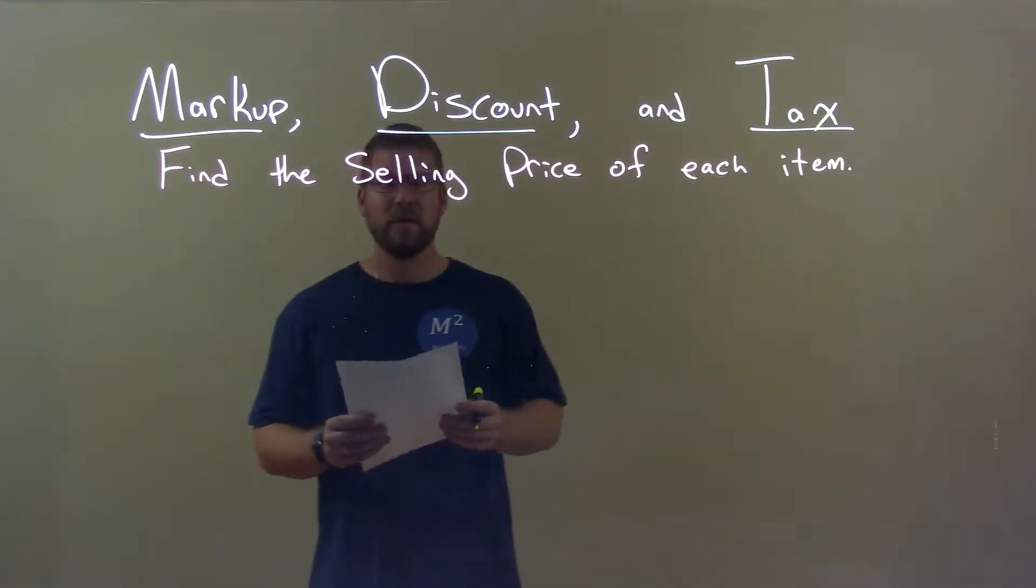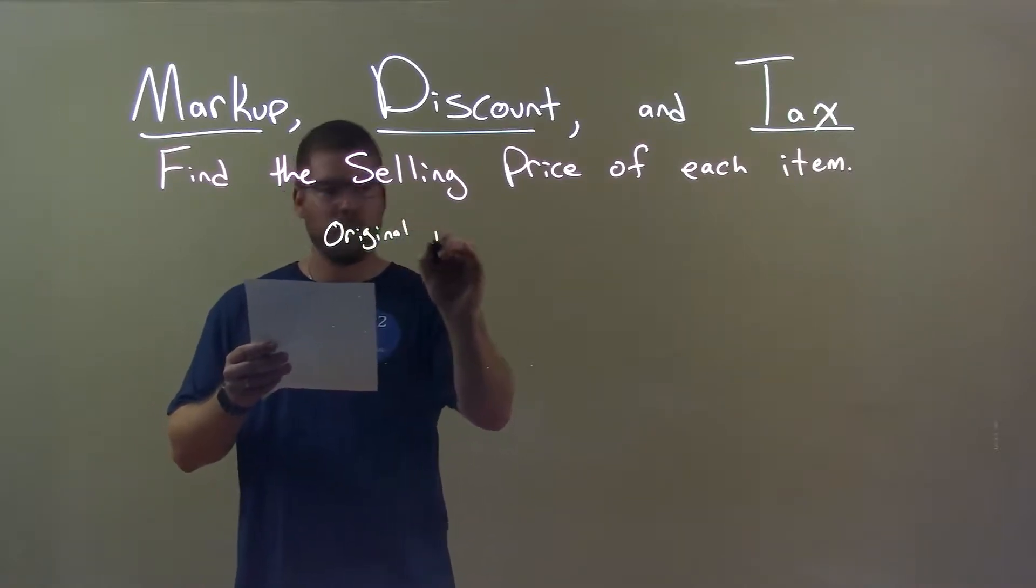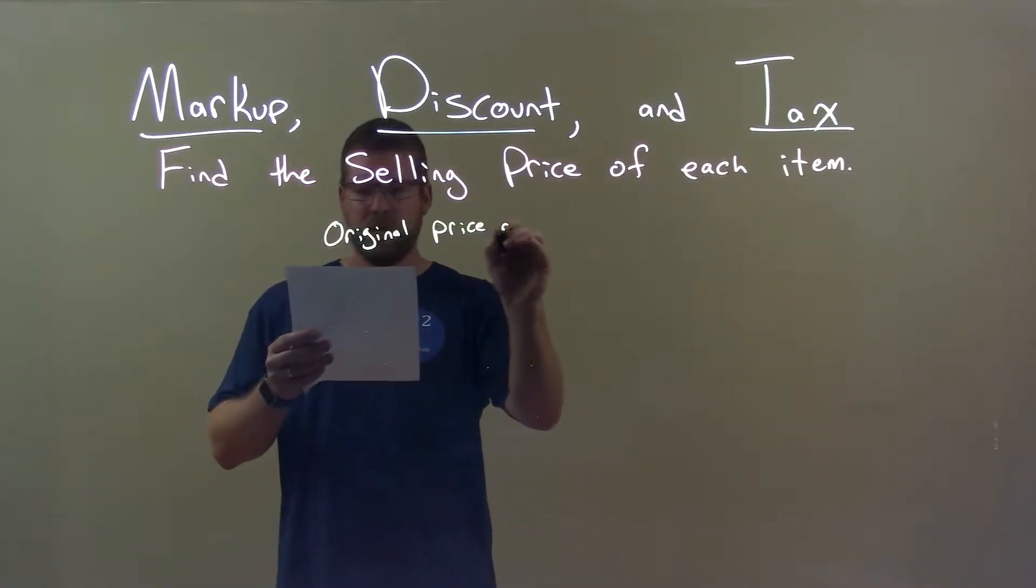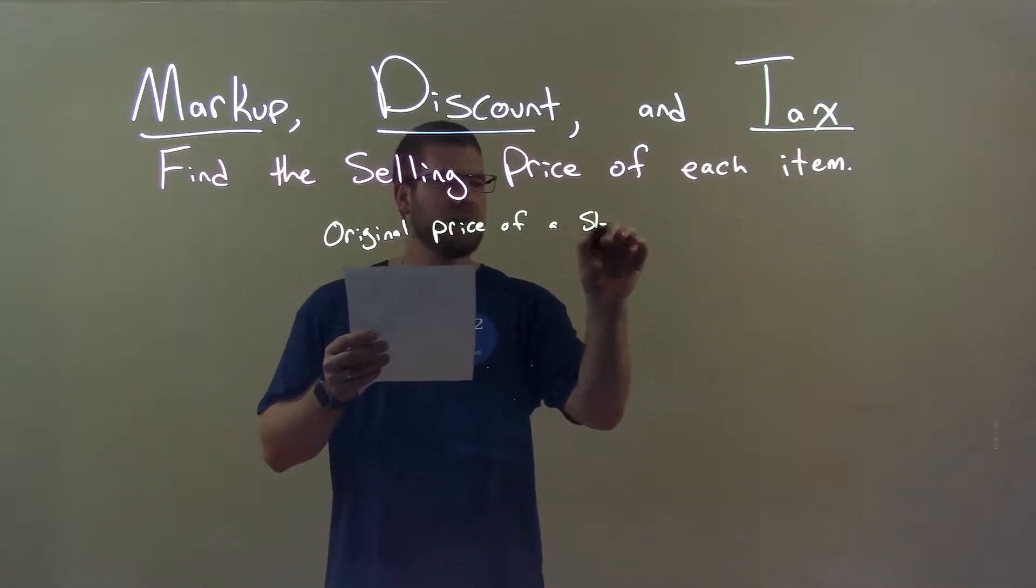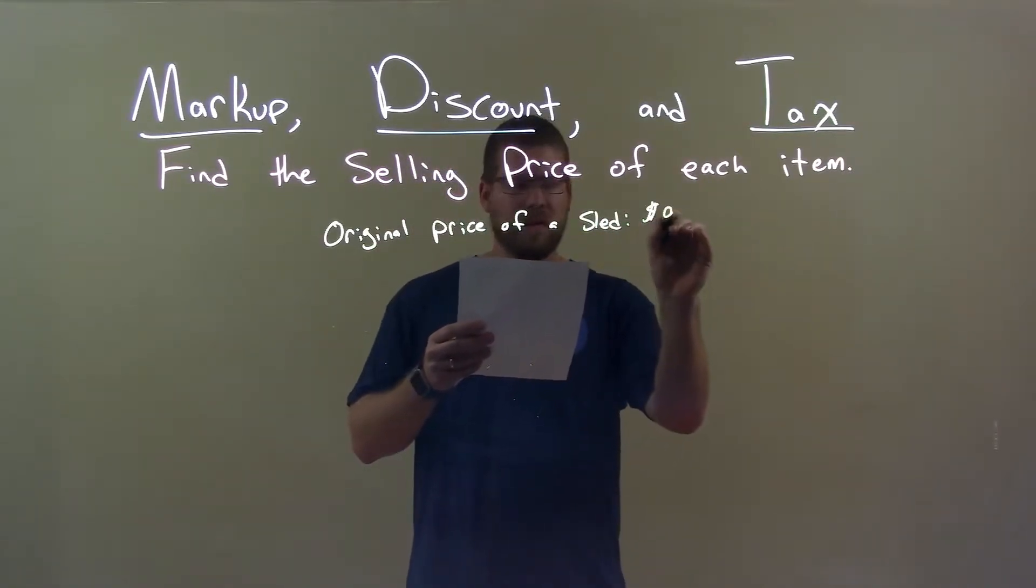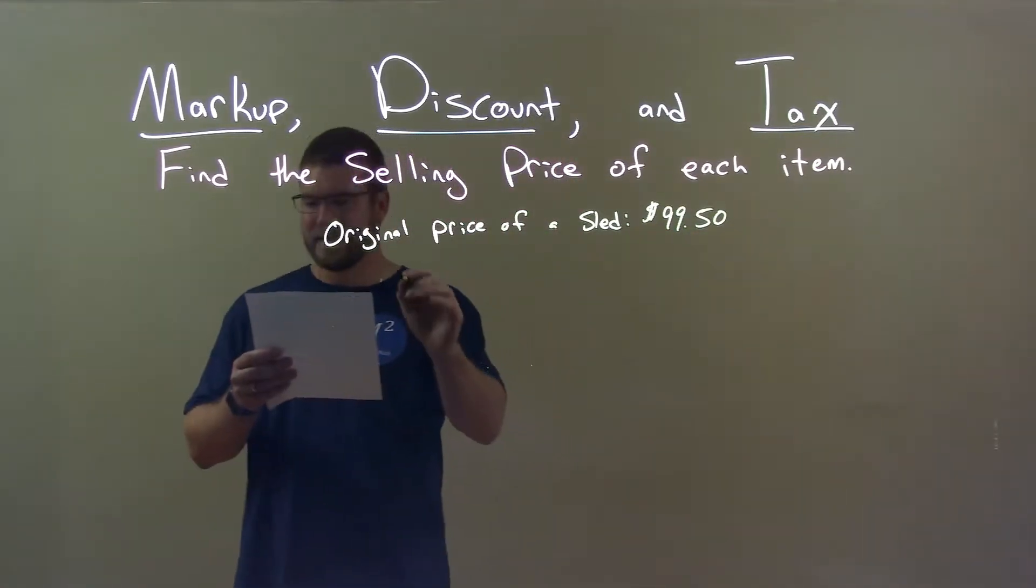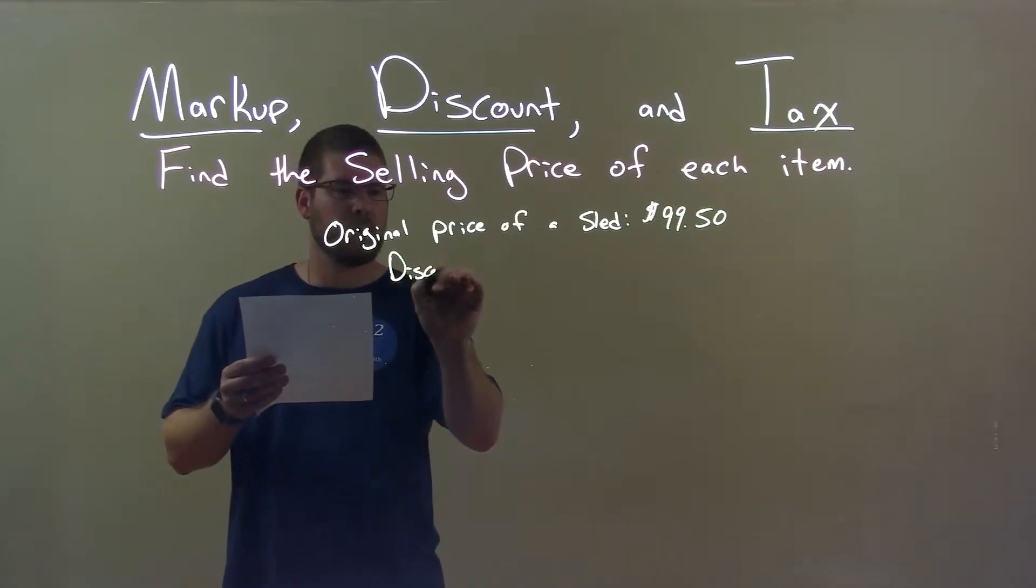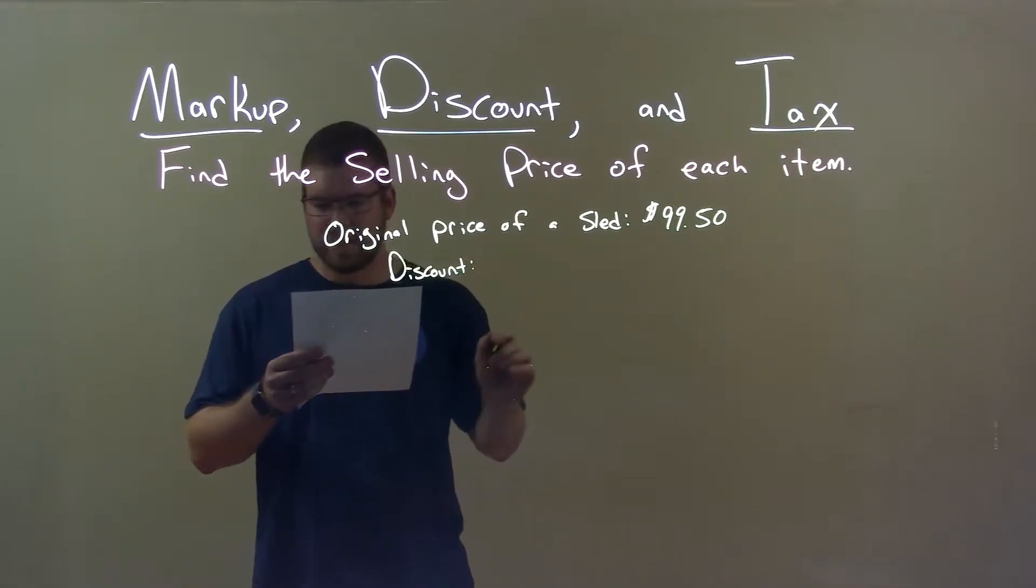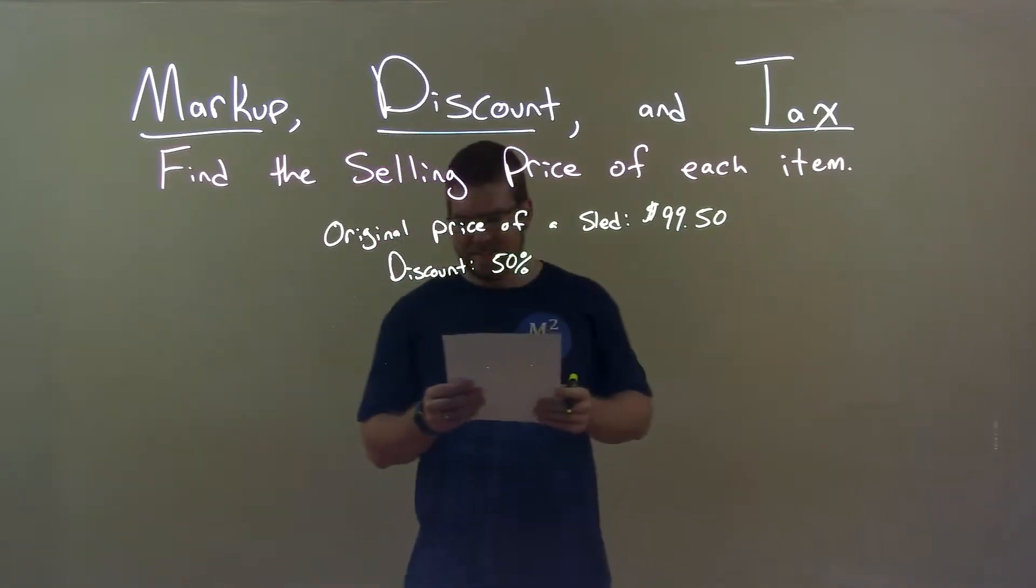So if I was given this item, the original price of a sled is $99.50. Our discount is 50%, and we have a 50% discount.